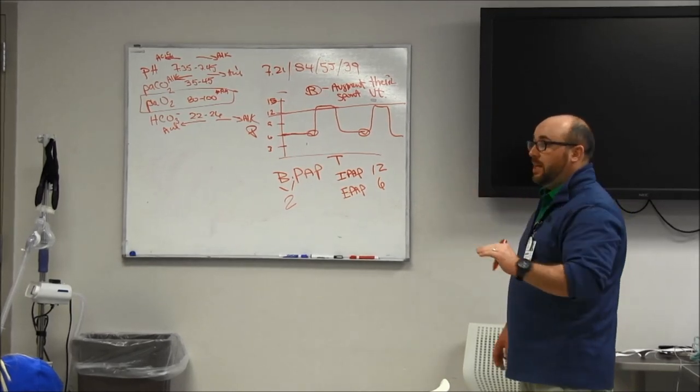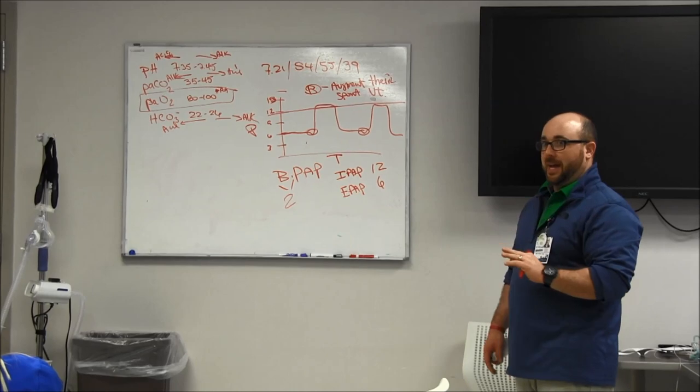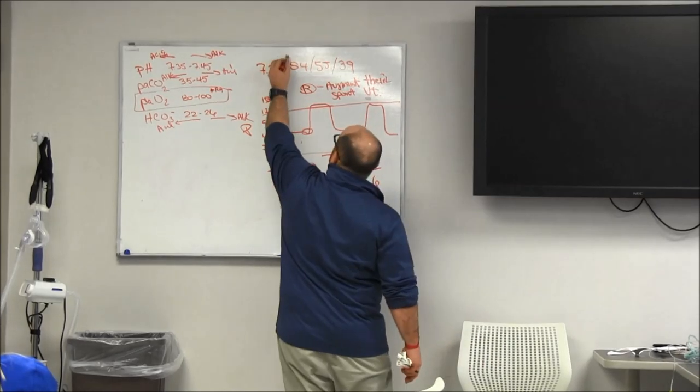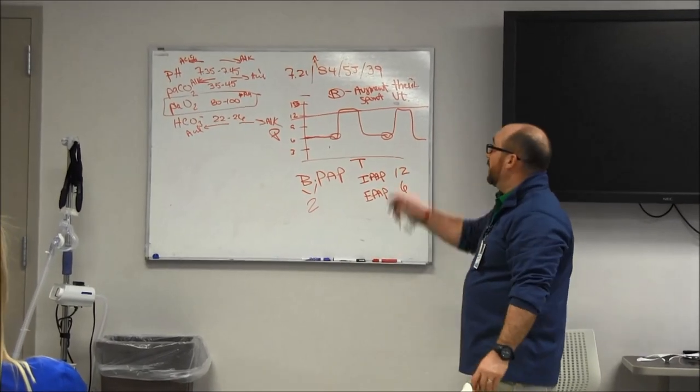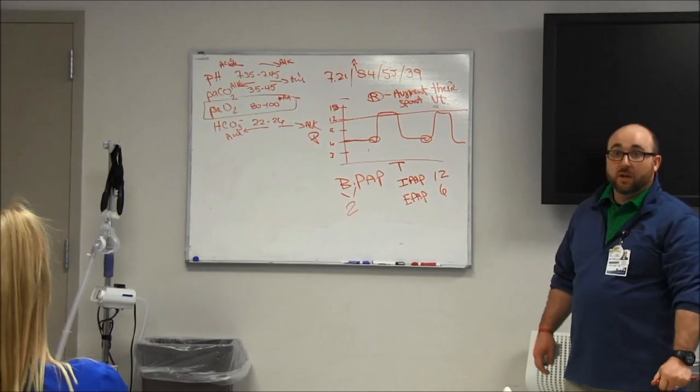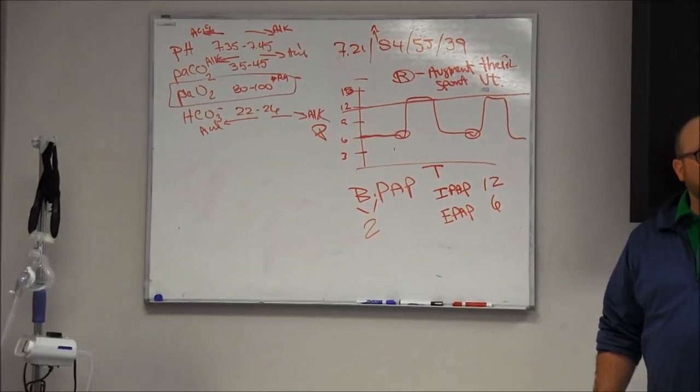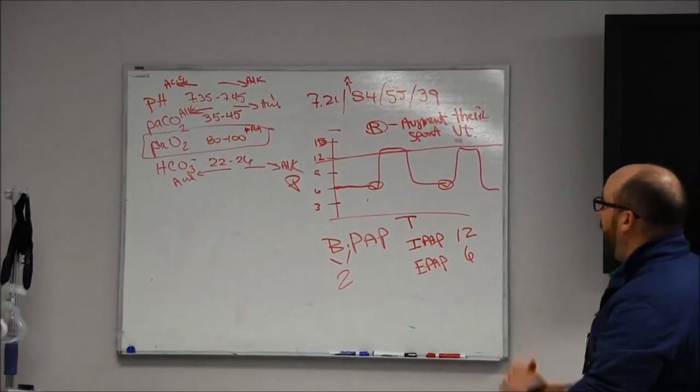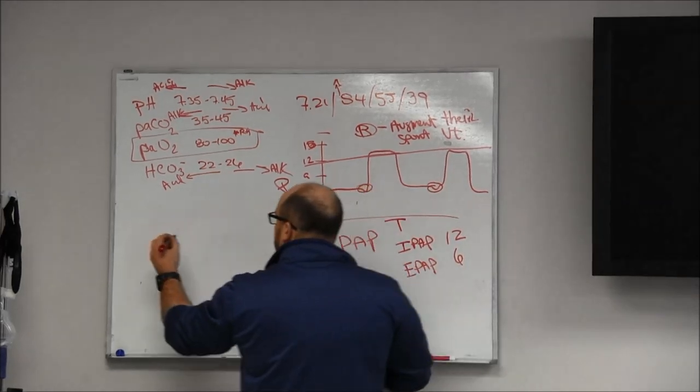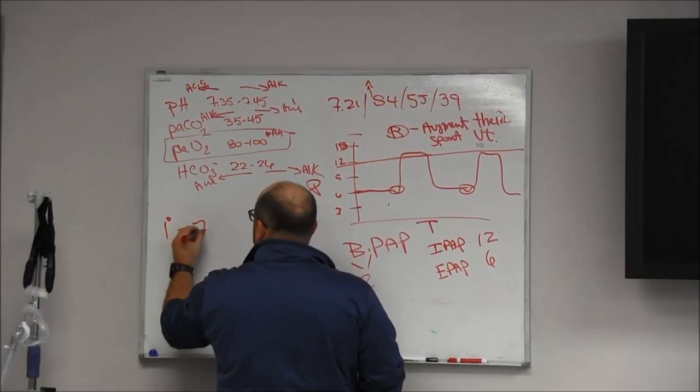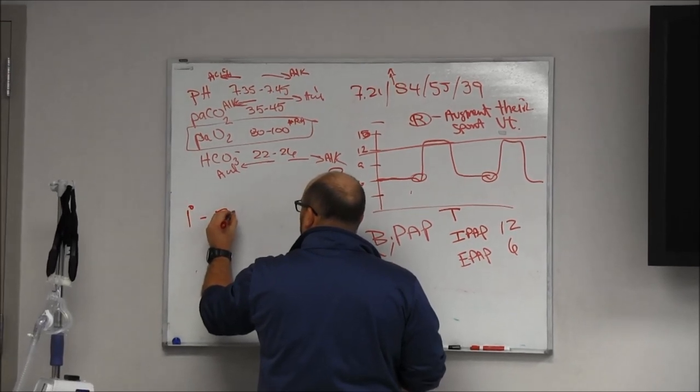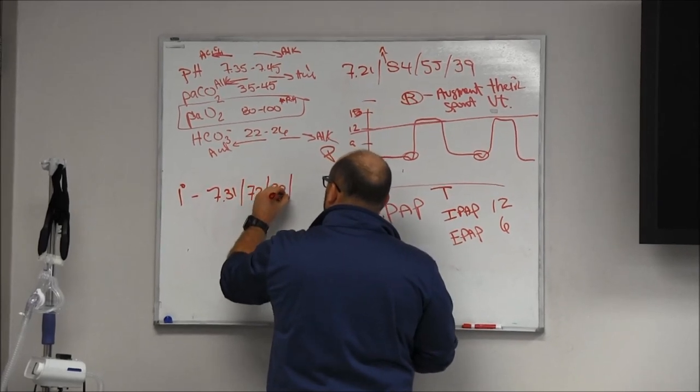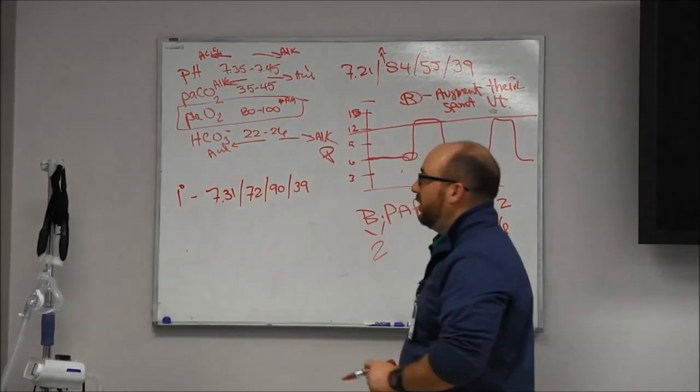When you see a patient respond that way, you'll know that they needed it really bad. If they slow down, the PCO2 goes up and the PO2 goes down really quickly. If they start working really hard and wearing out, that number will go up and their pH will go lower. So we put this gentleman on BiPAP. Wait one hour. Now we have our new blood gas one hour later.